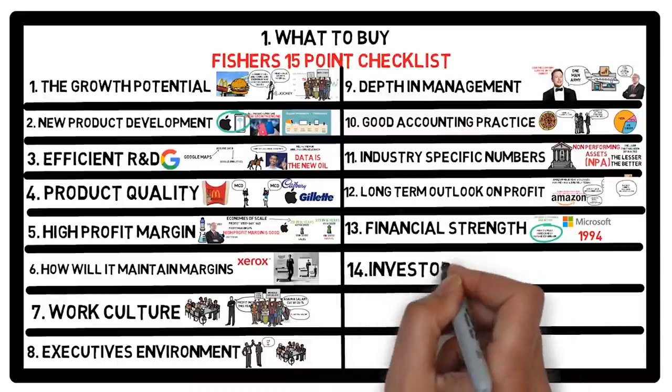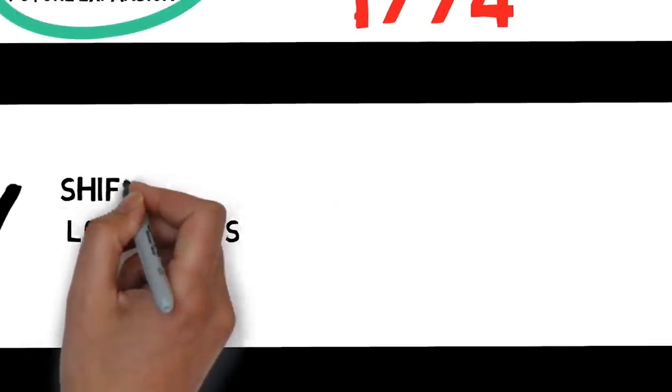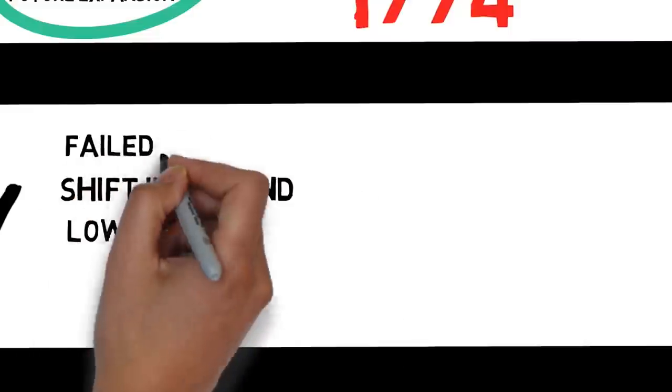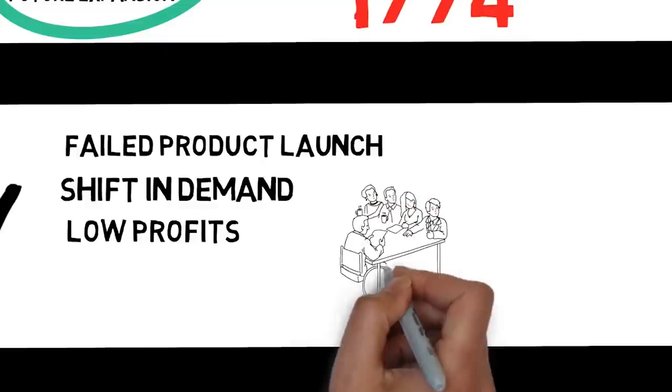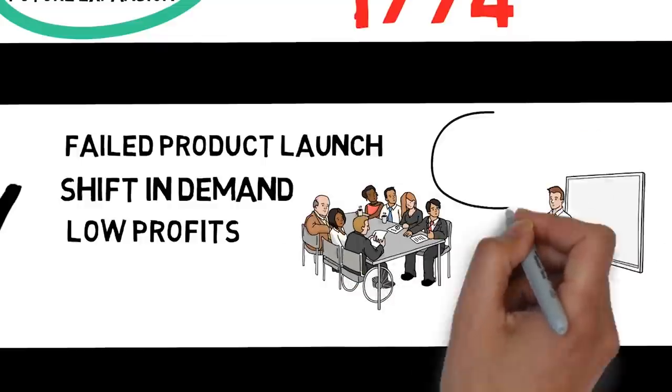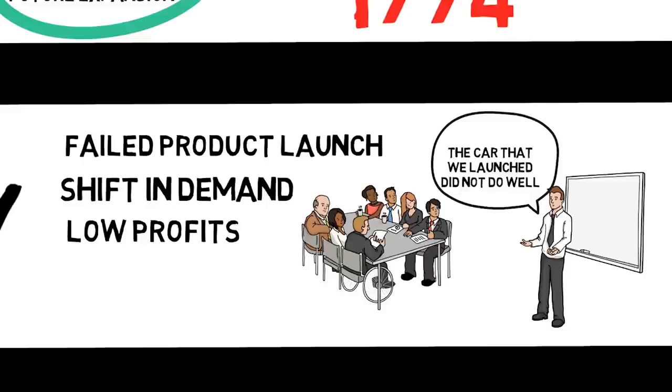Number 14: Good relationship with investors. Profit disappointments, shifts in demand for one's product, failed product launches, etc., are the unavoidable reality for even the most successful companies. The key is transparency. The management team has to be open about such matters. Companies that clam up are companies to avoid.